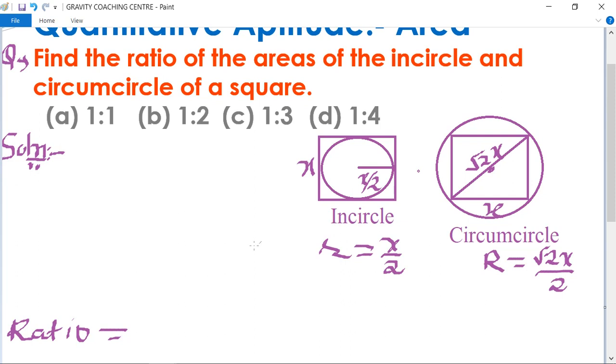Area of incircle upon area of circumcircle: π r squared upon π R squared. π cancels, so here r squared means x upon 2 whole square.